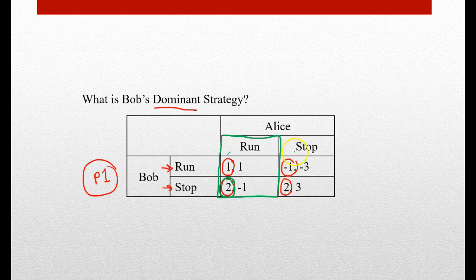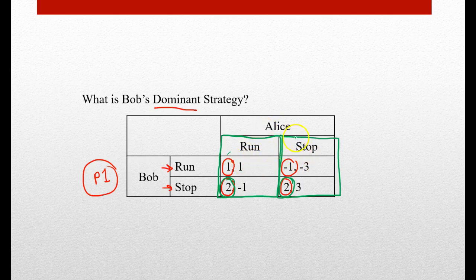Bob's best interest is to stop. Now let's go over to the stop column. What if Alice chooses to stop — what should Bob choose? We have negative one and we have two. Positive is always better than negative, so two is higher and Bob should choose to stop. Now in either case, whatever Alice chooses, Bob should choose to stop.